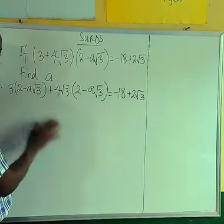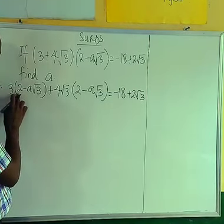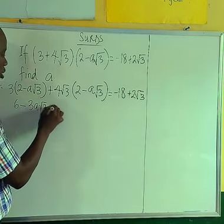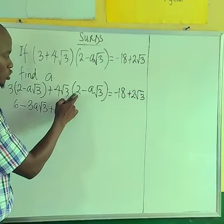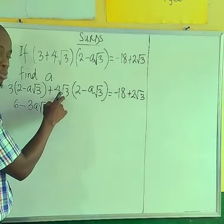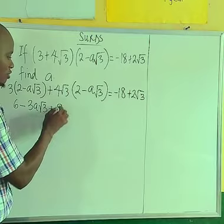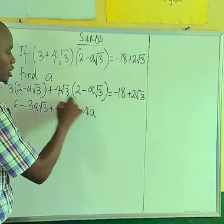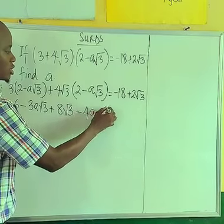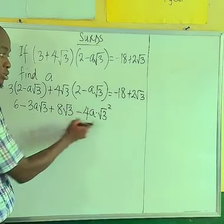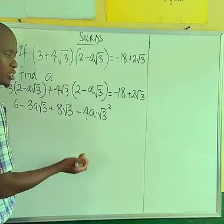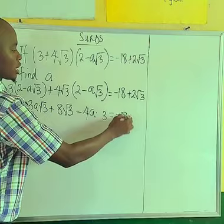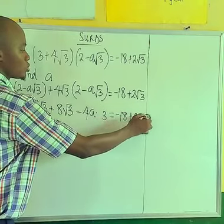Opening the brackets: 3 times 2 gives 6, minus 3a√3; then 4√3 times 2 gives 8√3; then minus 4a times √3 times √3, and since √3 squared equals 3, that term becomes minus 12a. So the left side expands to: 6 - 3a√3 + 8√3 - 12a, and this equals minus 18 plus 2√3.